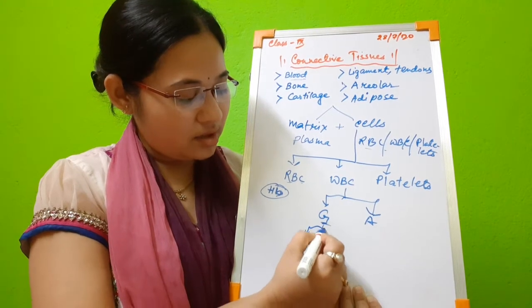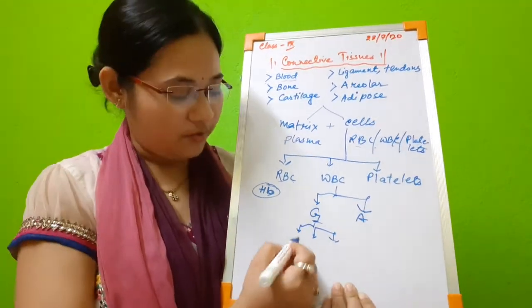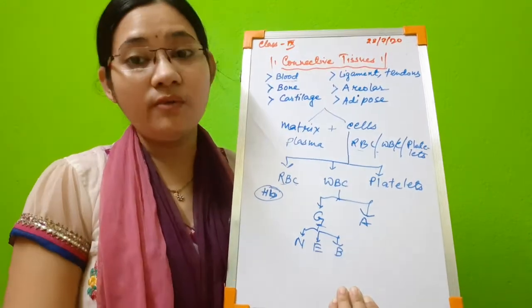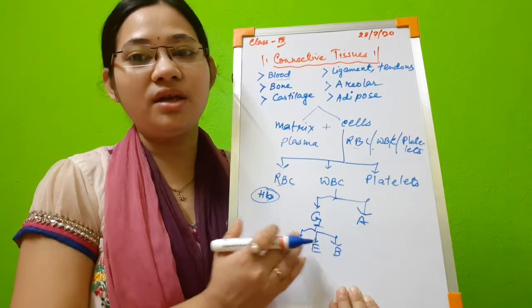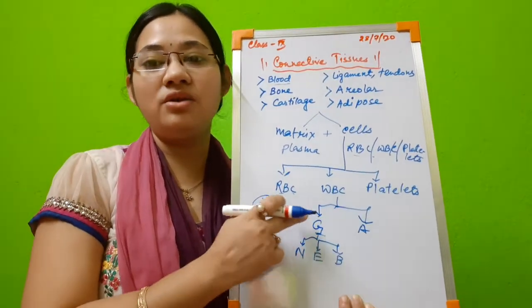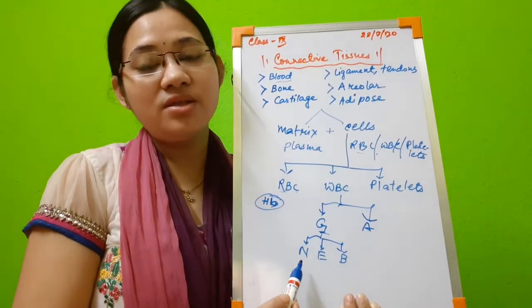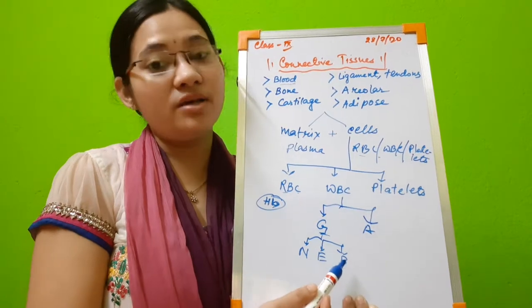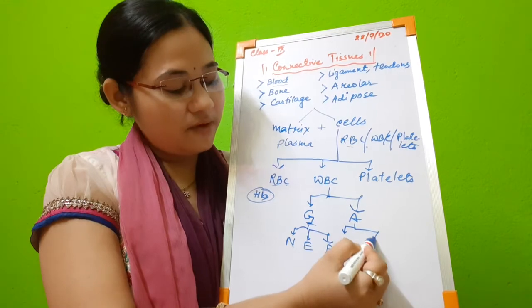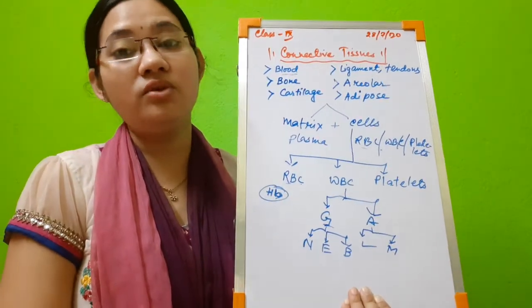Granulocytes are again of three types: neutrophil, eosinophil, and basophil. So please remember, WBC is of two types — granulocytes, which are again of three types: neutrophils, eosinophils, and basophils. And agranulocytes are of two types: lymphocyte and monocyte.